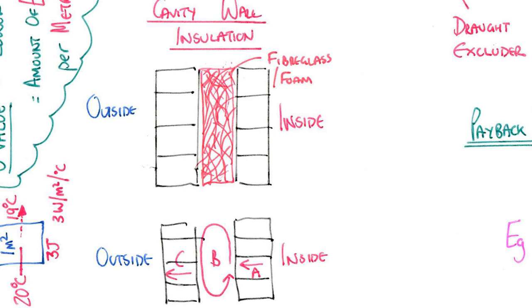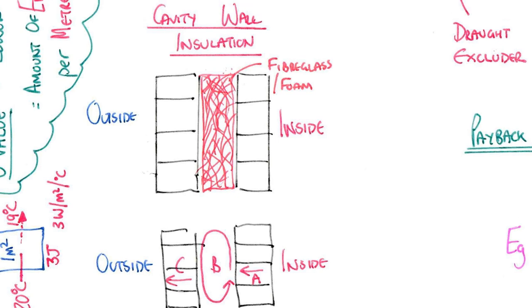What we do instead is pack that cavity space with fiberglass or foam. Those bits of foam and fiberglass stop air moving around and trap bits of air. Cavity wall insulation is a very good way of keeping your home warm.